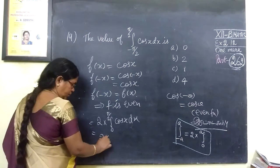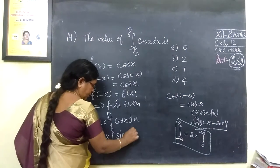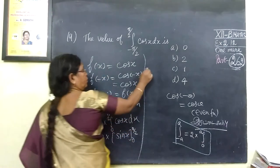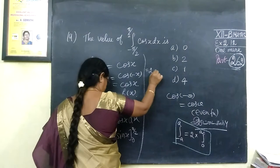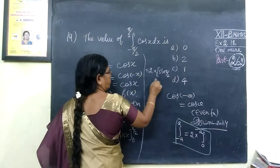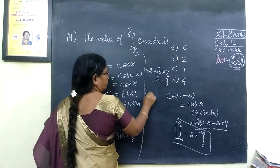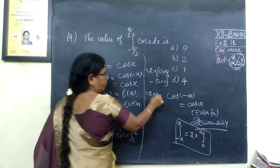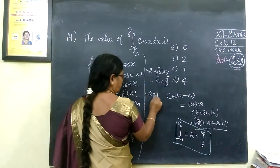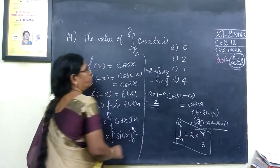Equal to twice into integral 0 to pi by 2 of cos x. Equal to 2 into sin pi by 2 minus sin 0. So, 2 into sin pi by 2 equals 1, sin 0 equals 0. That gives us 2 into 1 minus 0.